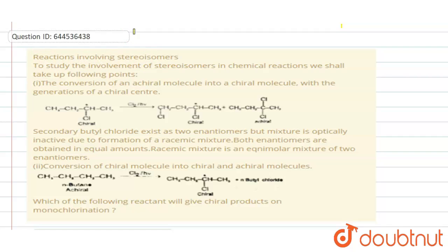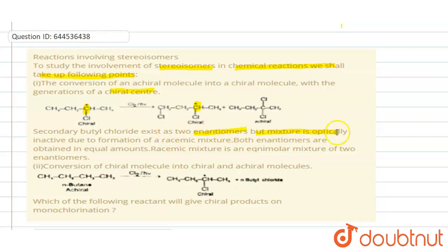This is a passage-type question on reactions involving stereoisomers. The first point is the conversion of an achiral molecule into a chiral molecule with the generation of a chiral center. Secondary butyl chloride exists as two enantiomers, but the mixture is optically inactive due to the formation of a racemic mixture. Enantiomers are obtained in equal amounts; a racemic mixture is an equimolar mixture of two enantiomers.